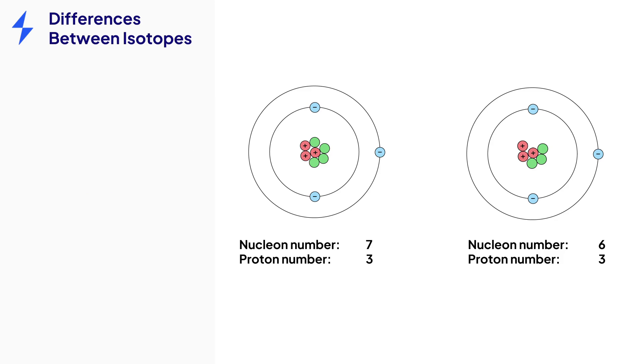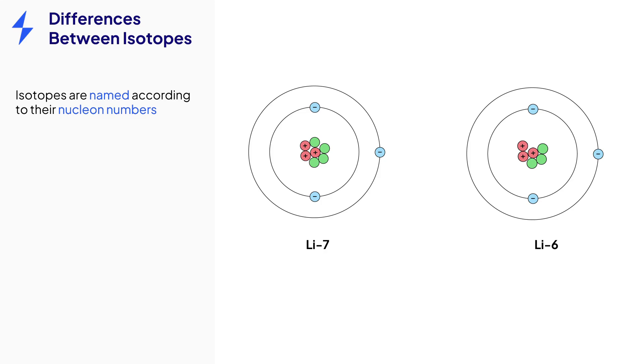Isotopes are given different names to help distinguish between them. These names are based on their nucleon numbers. This first atom is called lithium-7 because it's an isotope of lithium and it has a nucleon number of 7. The second has a nucleon number of 6 and is therefore lithium-6.